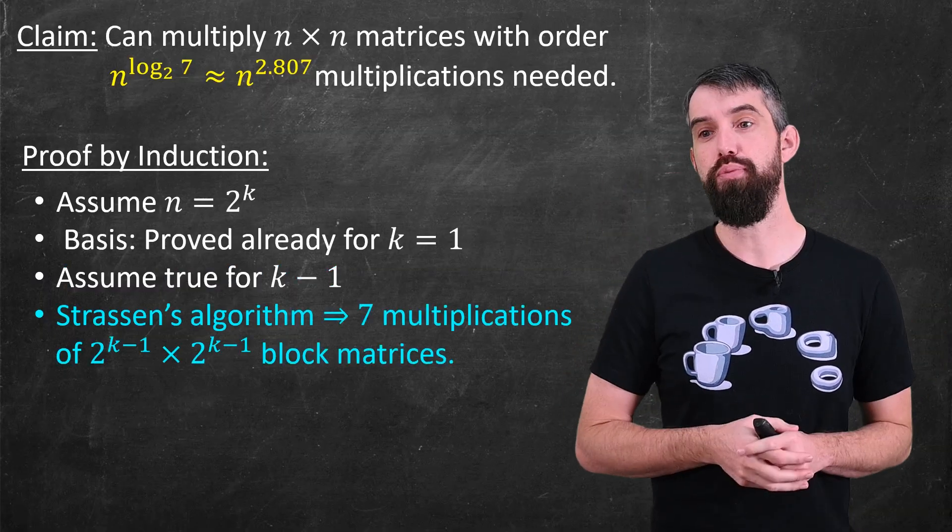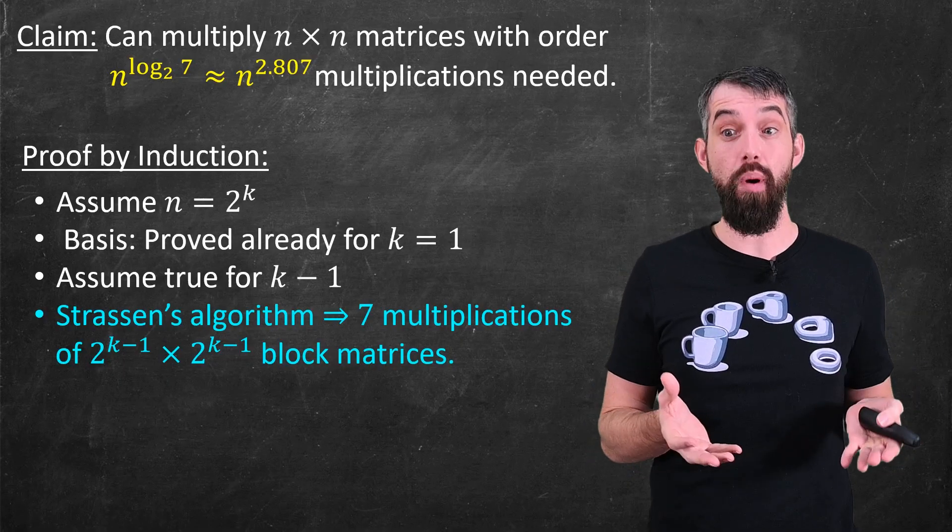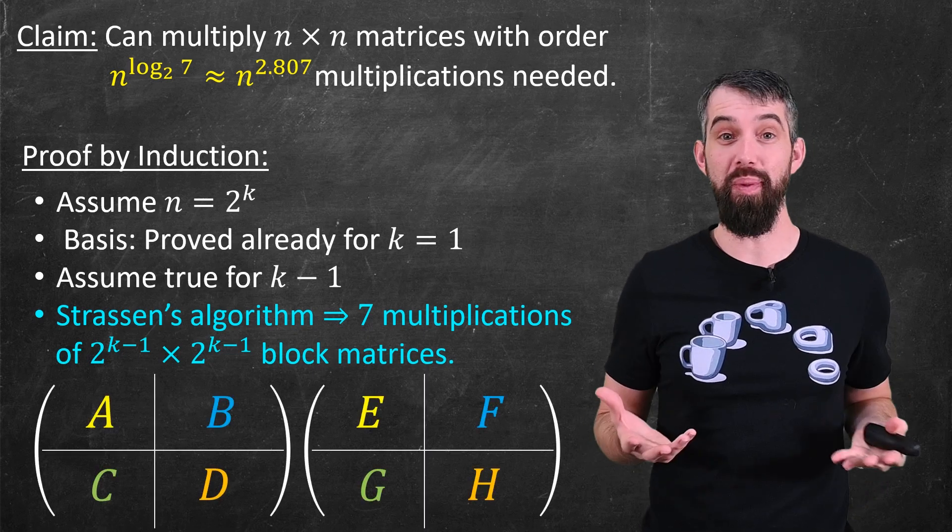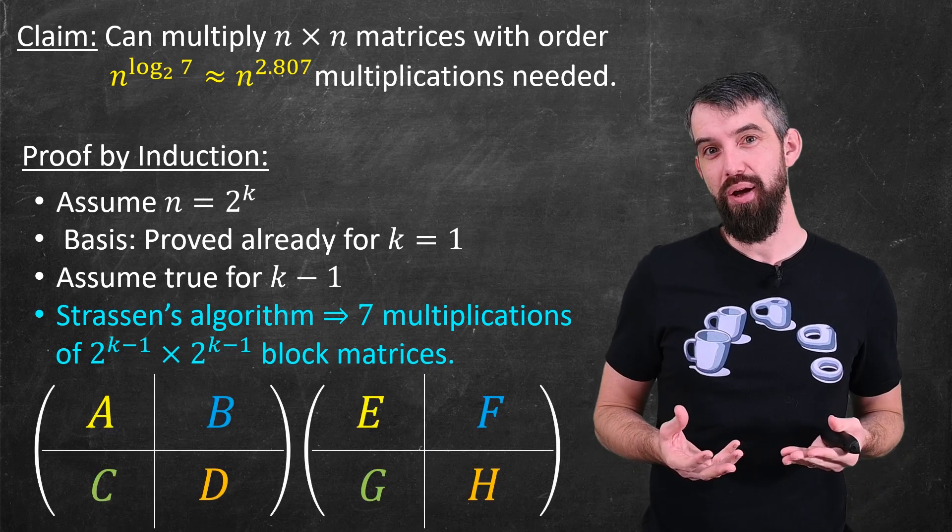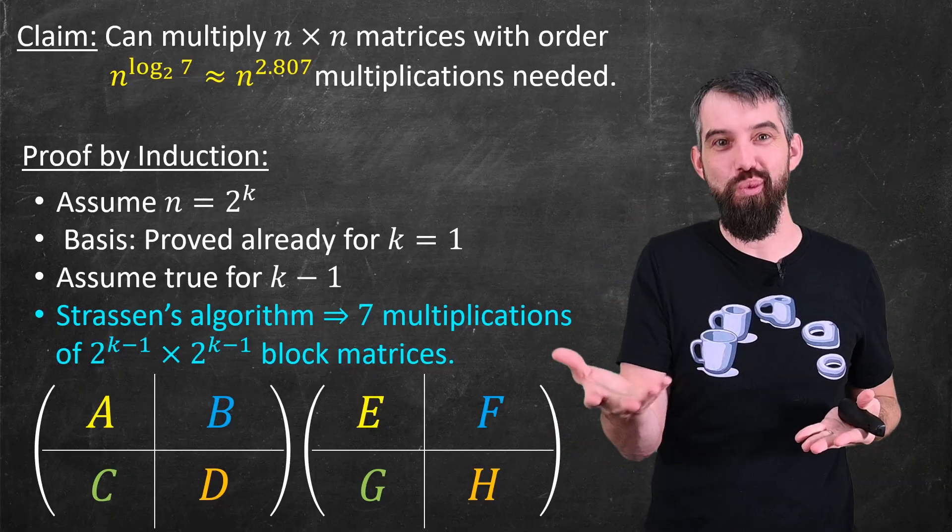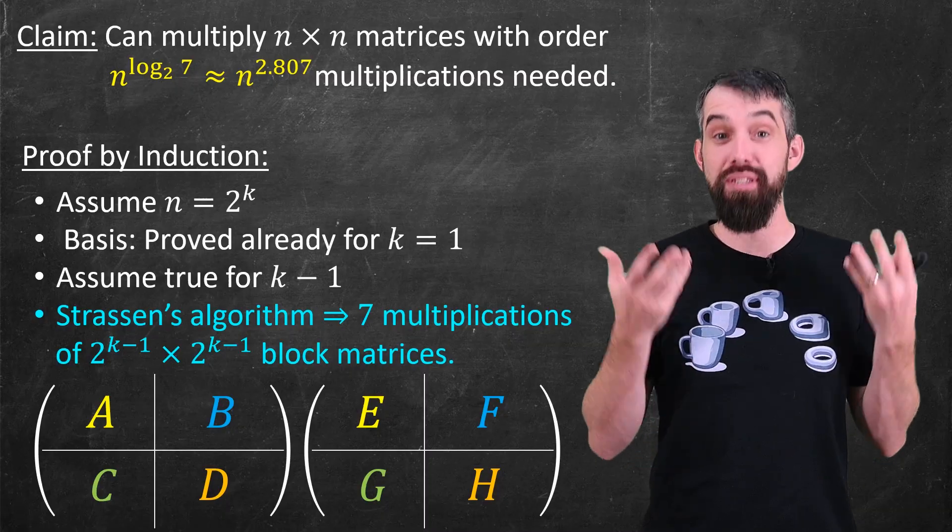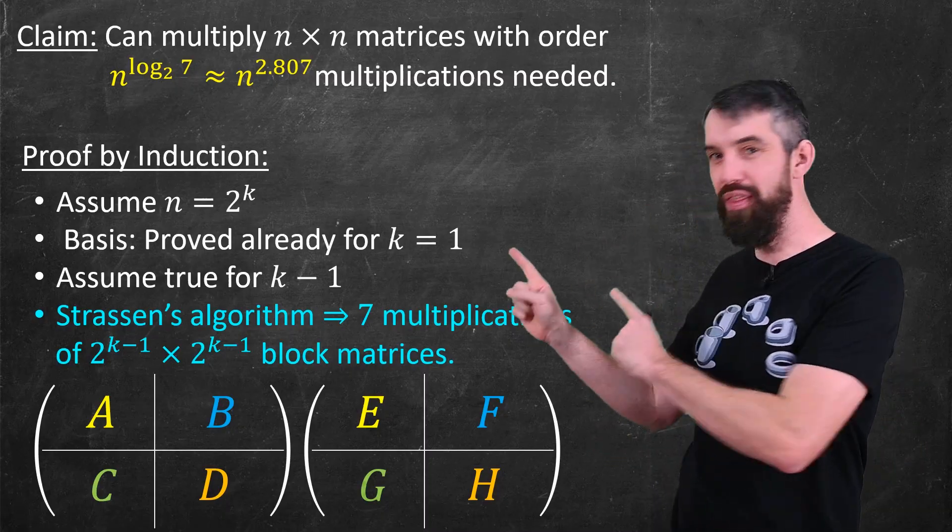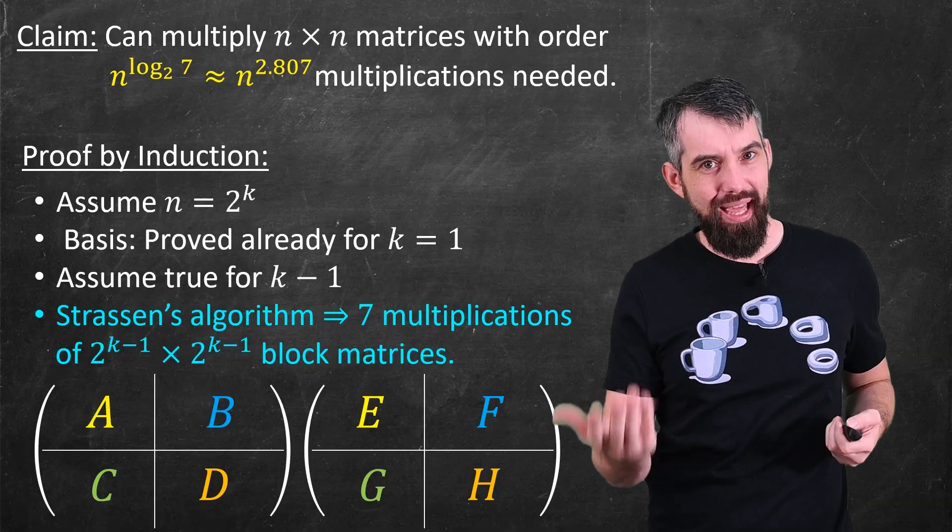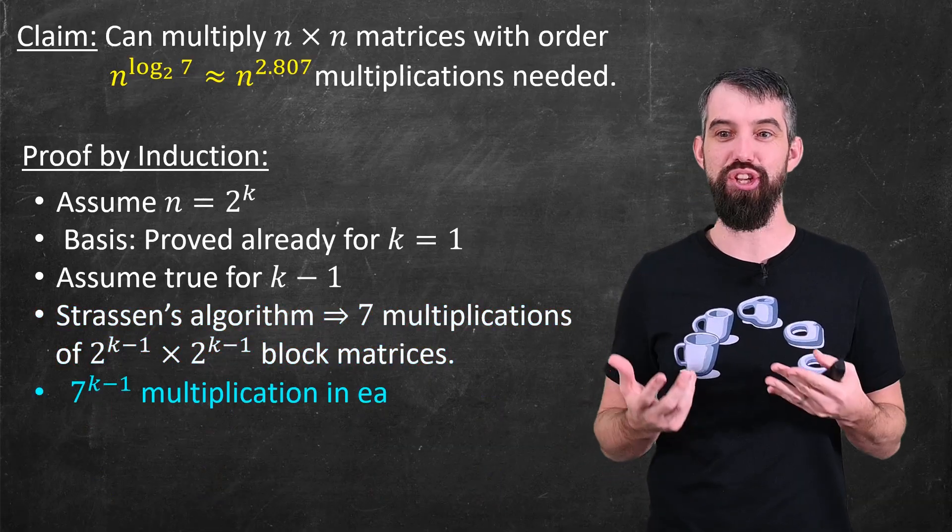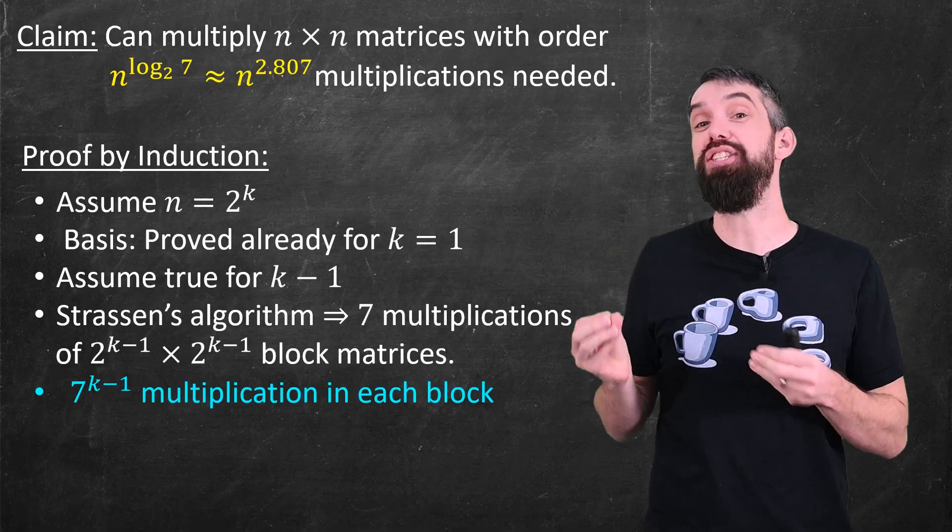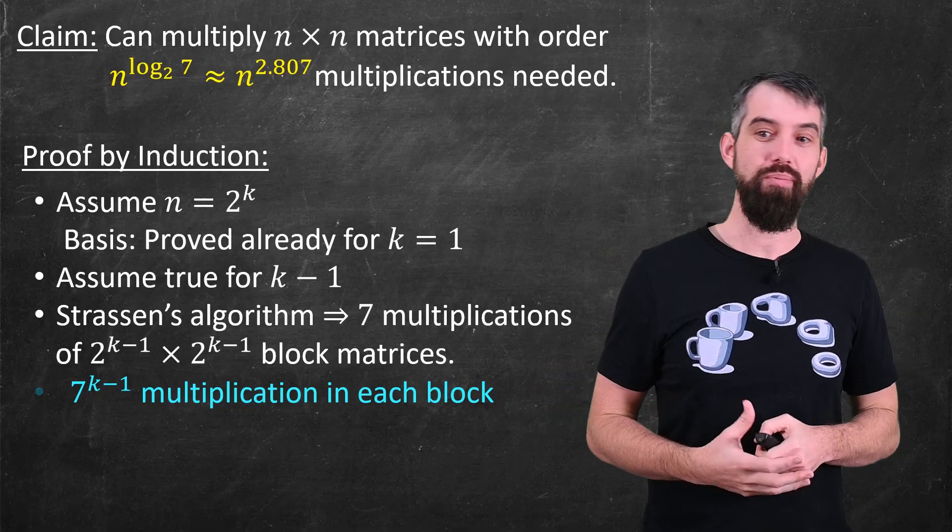And the basic way I'm going to prove this is I'm going to use the Strassen algorithm on the block matrices. So what I'm going to basically do is just assume that this is just multiplication of 2 by 2 matrices, where each entry in the matrix is itself a 2 to the k minus 1 by 2 to the k minus 1 matrix. I'm going to use the Strassen algorithm again, and I know that for this it only takes 7 multiplications. But then within each block I get to use my induction hypothesis. I know that it takes 7 to the k minus 1 multiplications in each individual block.